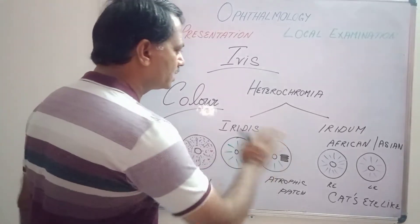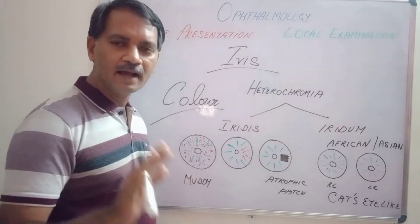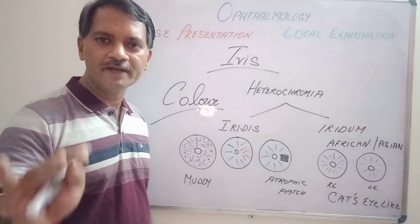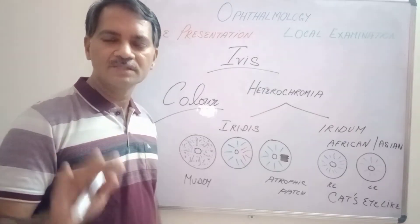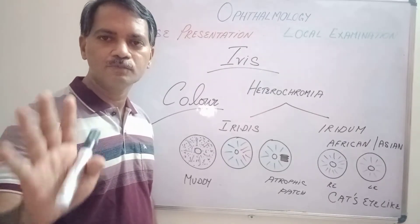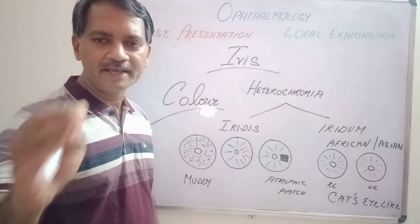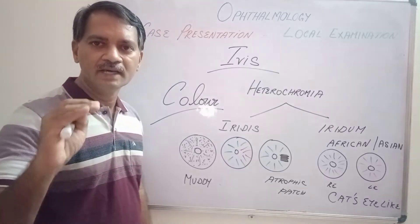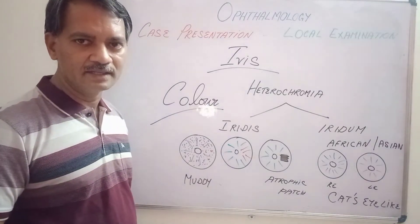You should know what is iridis and iridum. Iridis is singular, affecting only one eye. Iridum is plural, affecting both eyes. Let us see some examples where there is heterochromia iridis.